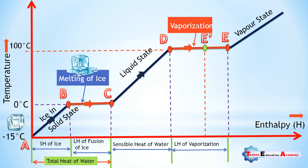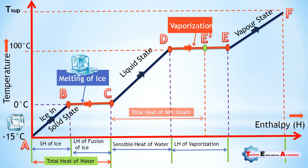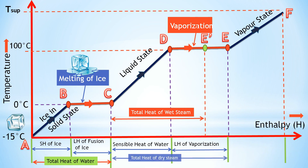Superheated steam is obtained by heating dry saturated steam at constant pressure. In superheated steam there is no moisture content. The process of superheating is shown by line EF on the temperature-enthalpy diagram, and the amount of heat added during this process is called the heat of superheat. The temperature difference between the temperature of superheated steam and that of dry saturated steam is called the degree of superheat — that is, T_superheated minus T_saturated.